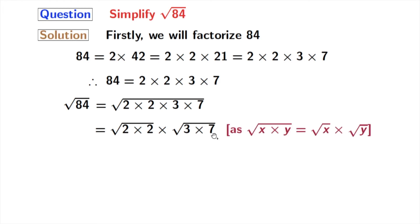Here we have used the rule of square root of x times y is equal to square root of x times square root of y. Here x is 2 times 2 and y is 3 times 7. Now from the first square root we get 2 and from the second square root we get square root of 21.